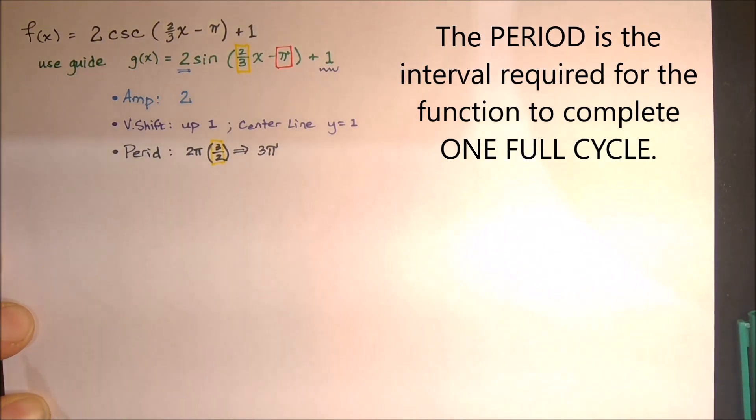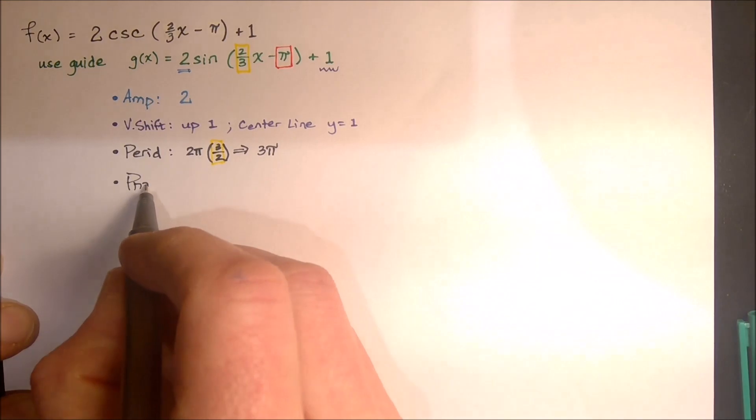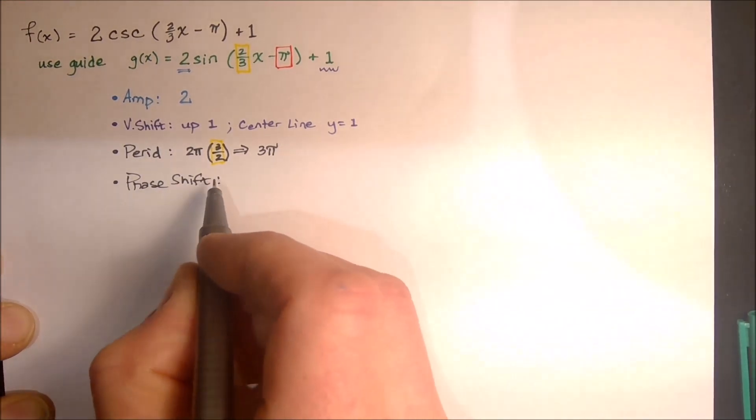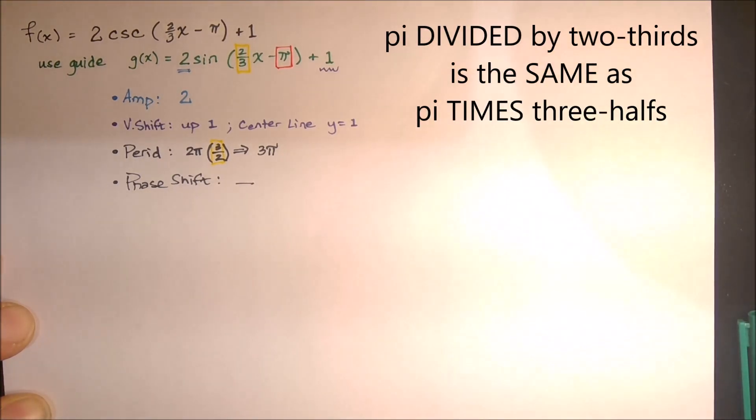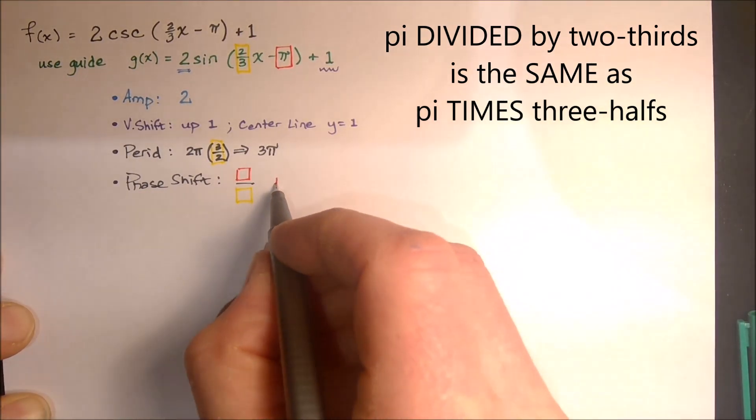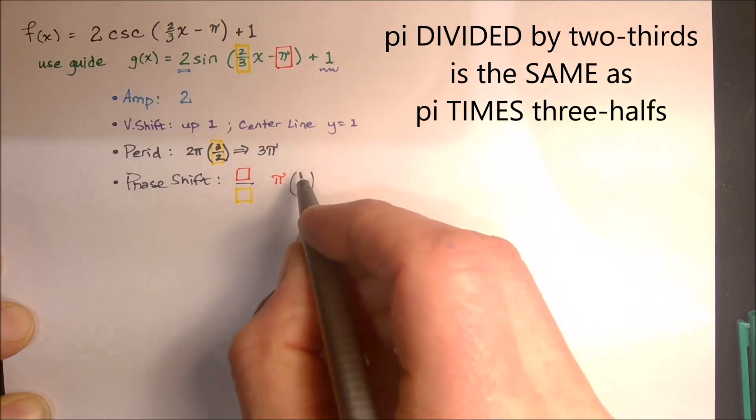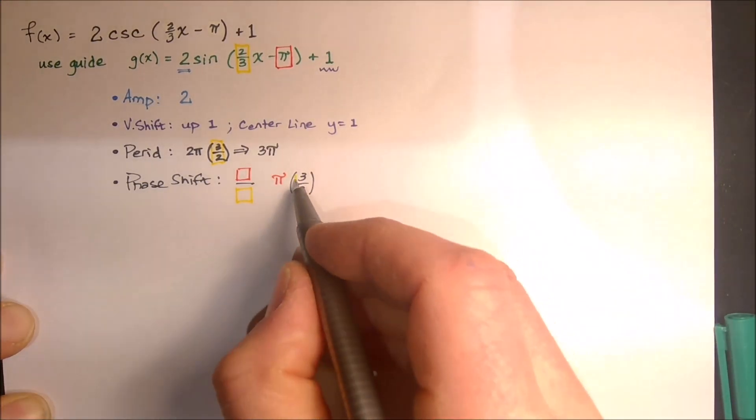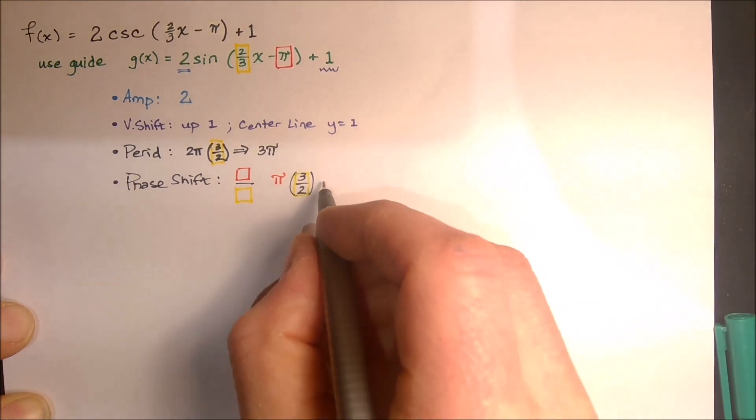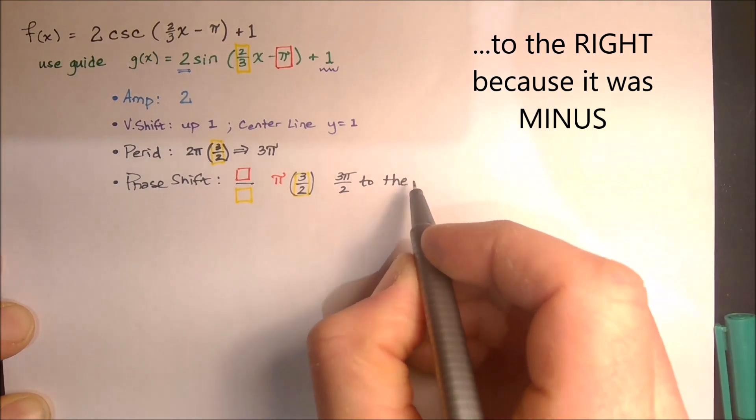So that means it's going to take 3 pi units to draw out this entire guide function. And then the last thing that we're going to look at is the phase shift. That's the horizontal transformation. It's actually a translation. You're going to use your number being added or subtracted and divide that by the coefficient of x. So what we actually have is pi, and I'm going to multiply by the reciprocal again, pi times 3 halves. So our phase shift is actually, it was minus, so it's 3 pi over 2 to the right.